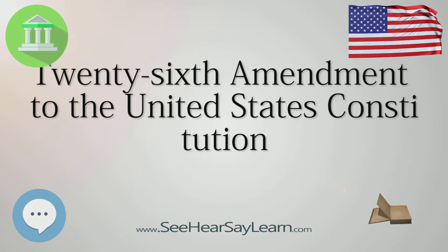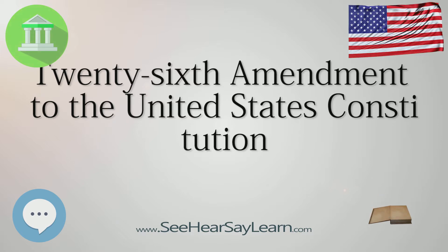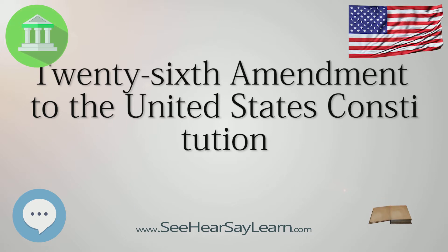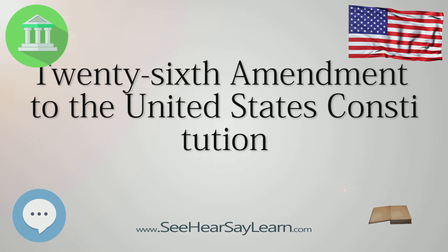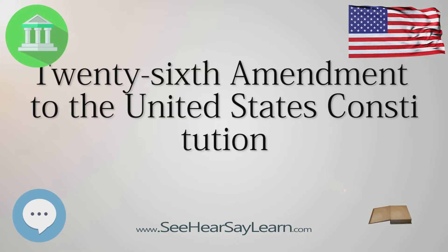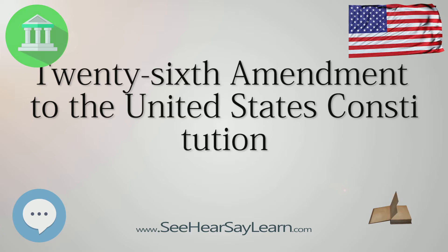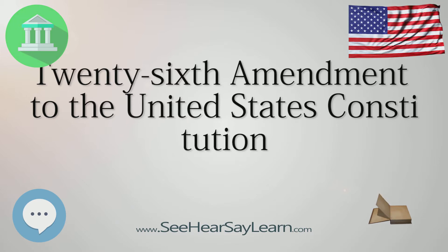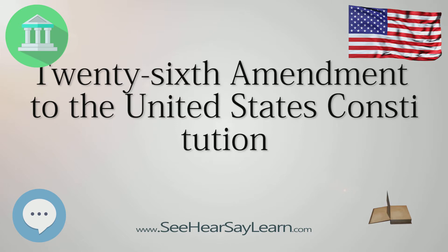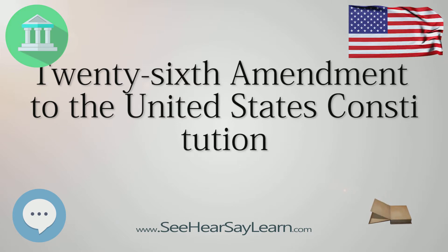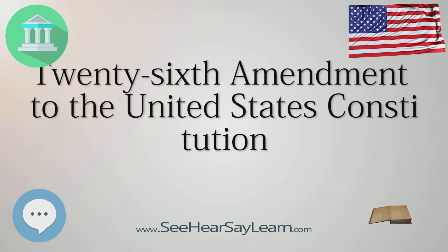President Dwight D. Eisenhower, in his 1954 State of the Union Address, became the first president to publicly state his support for prohibiting age-based denials of suffrage for those 18 and older. During the 1960s, both Congress and the state legislatures came under increasing pressure to lower the minimum voting age from 21 to 18, in large part due to the Vietnam War, in which many young men who were ineligible to vote were conscripted to fight, lacking any means to influence the people sending them off to risk their lives.